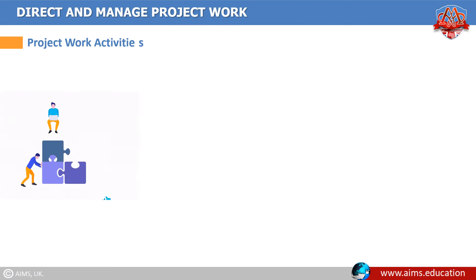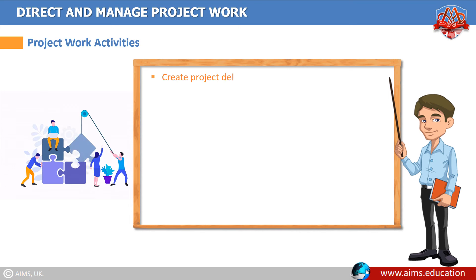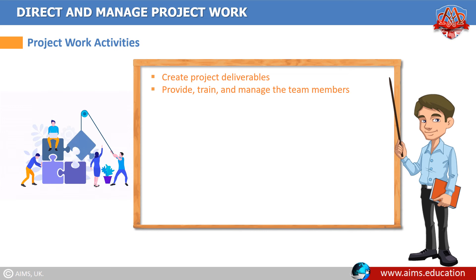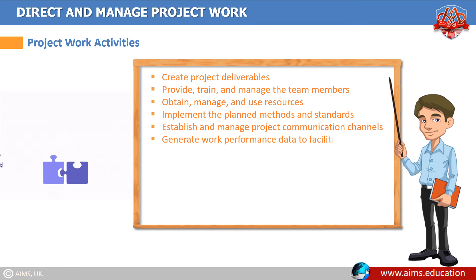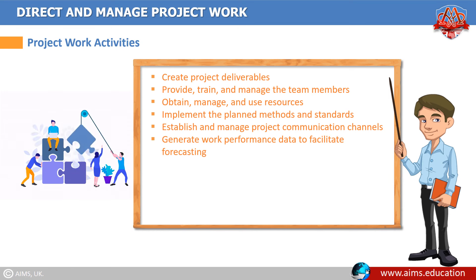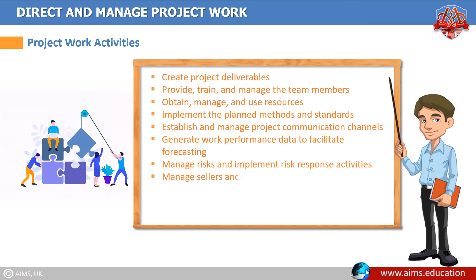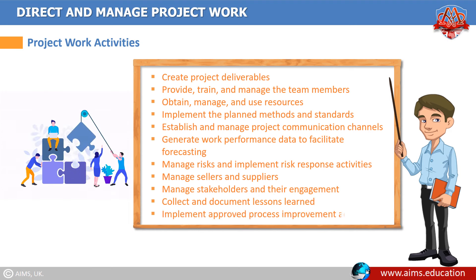Project work activities under the direct and manage project work process include: create project deliverables to meet the planned project work; provide, train, and manage the project team members; obtain, manage, and use all the resources; implement the planned methods and standards; establish and manage all project communication channels; generate work performance data related to cost, schedule, quality, and technical side; manage risks and implement risk response activities; manage sellers and suppliers; manage stakeholders and their engagement; collect and document lessons learned; and implement approved process improvement activities.